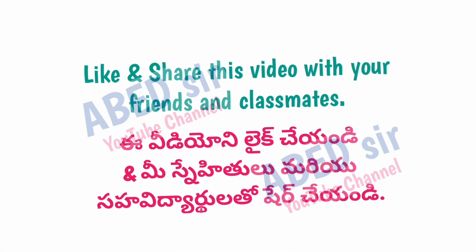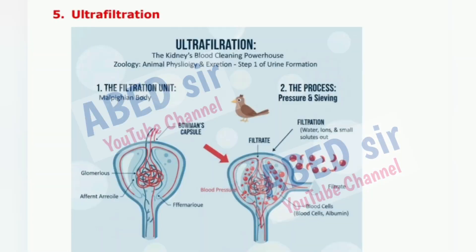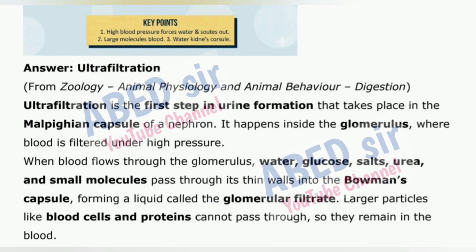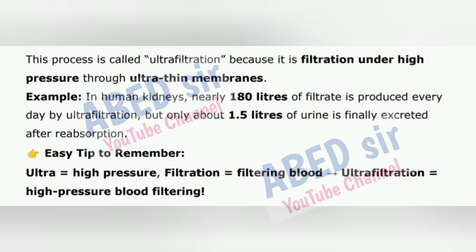Next Important Short Question 5: Ultrafiltration. Ultrafiltration is the first step in urine formation that takes place in the Malpighian capsule of a nephron. It happens inside the glomerulus where blood is filtered under high pressure. When blood flows through the glomerulus, water, glucose, salts, urea, and small molecules pass through its thin walls into the Bowman's capsule, forming the glomerular filtrate. Larger particles like blood cells and proteins cannot pass through, so they remain in the blood. This process is called ultrafiltration because it is filtration under high pressure through ultrathin membranes.